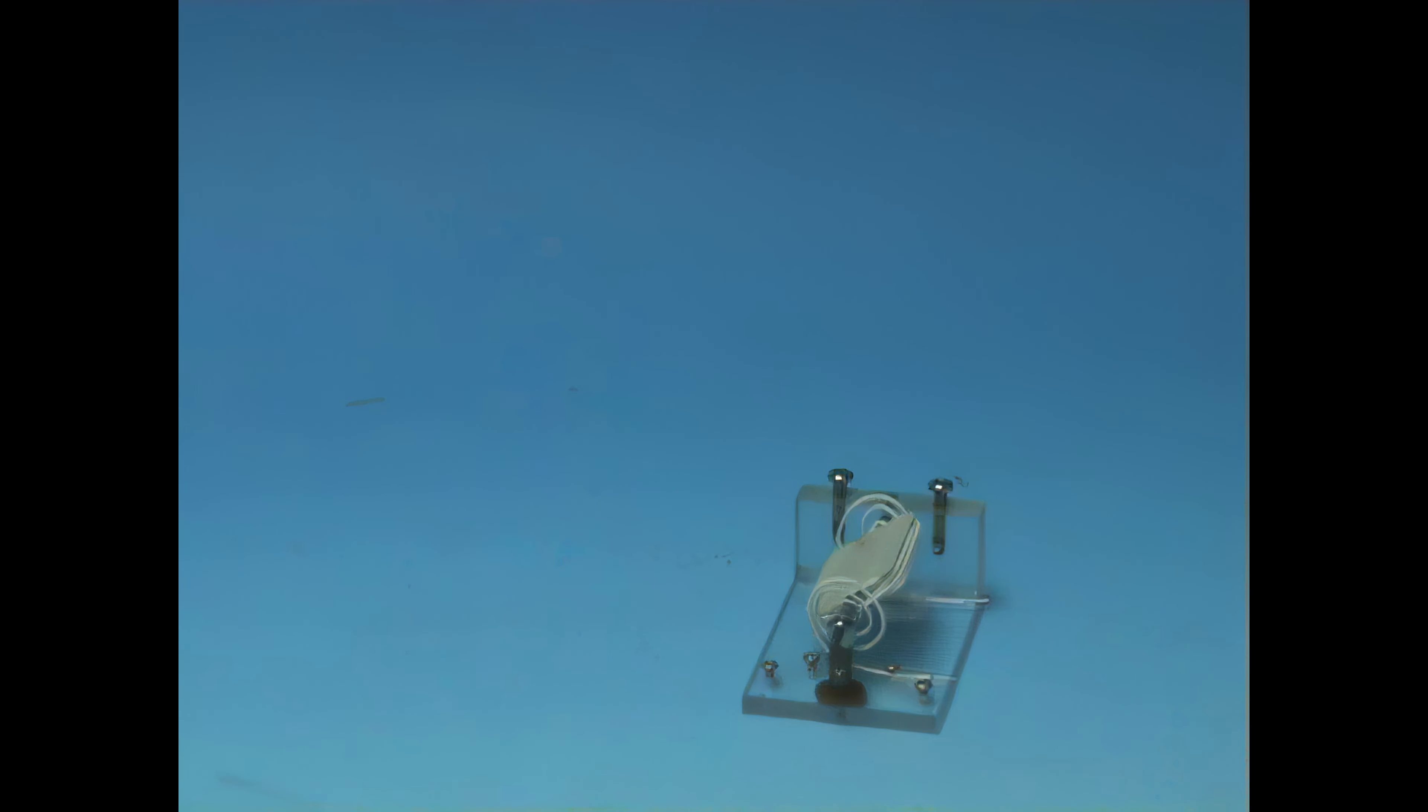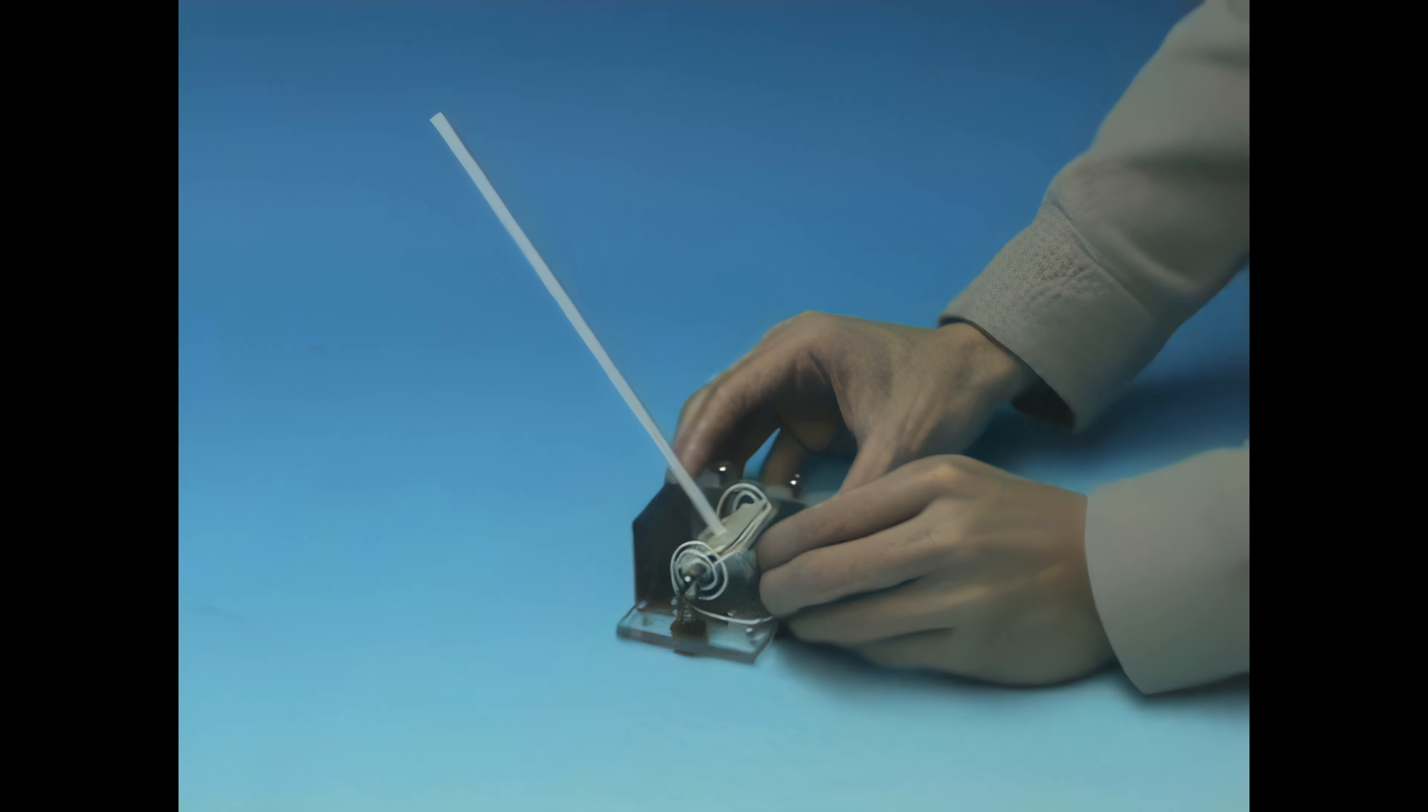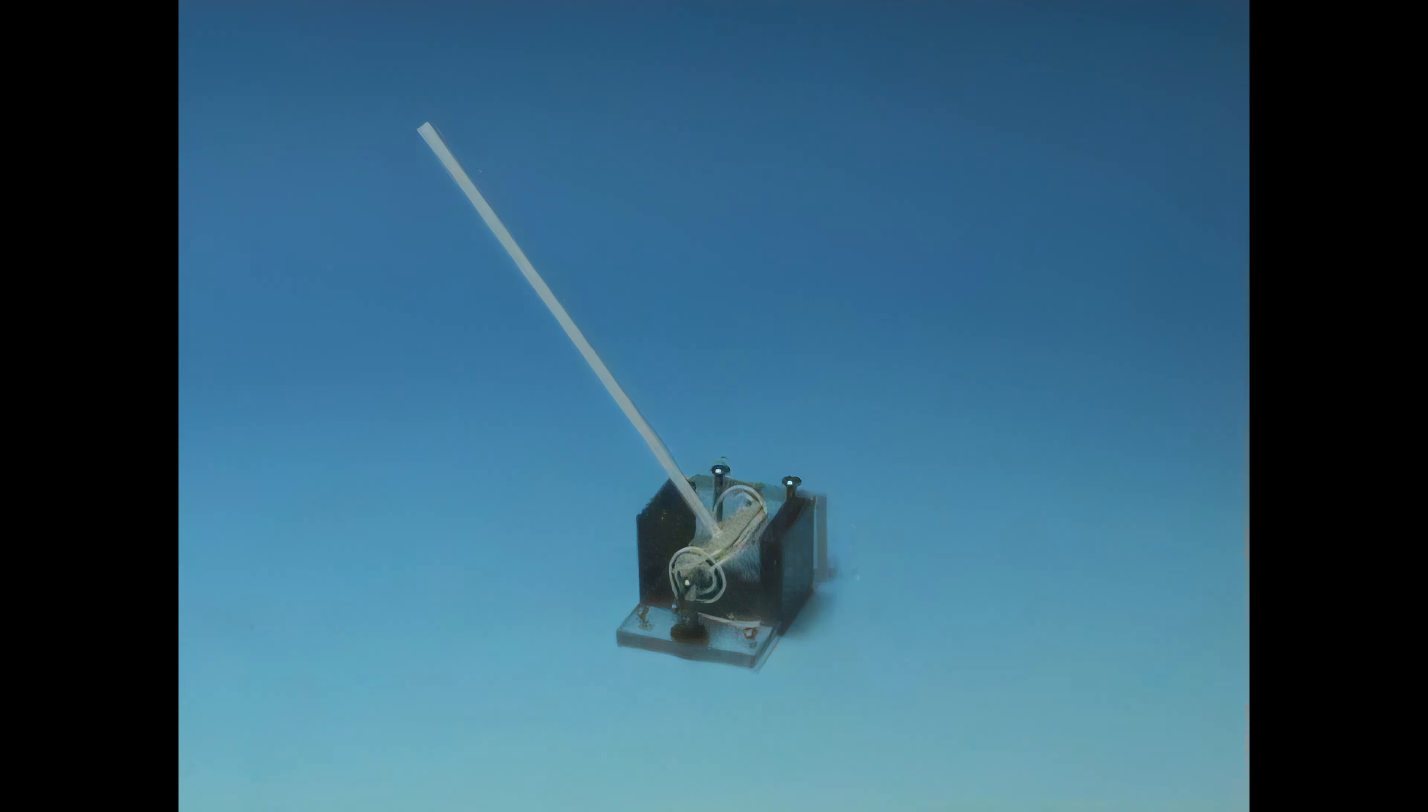Attach a drinking straw which acts as a pointer. Place the coil between two magnets attached to a steel yoke.